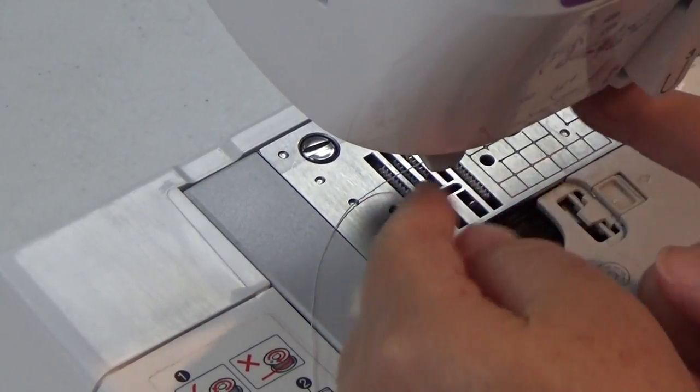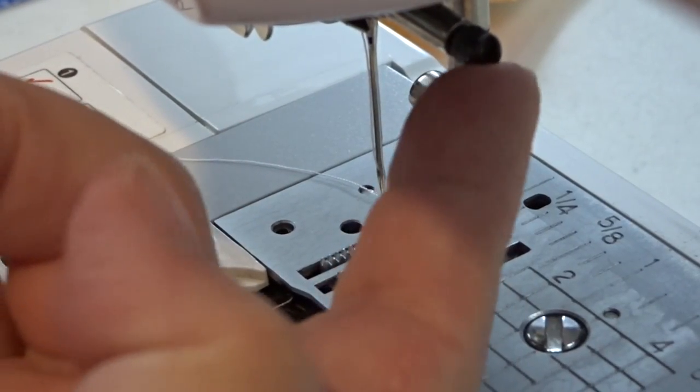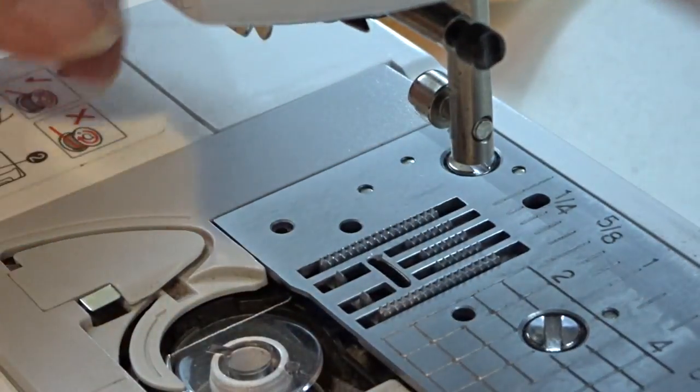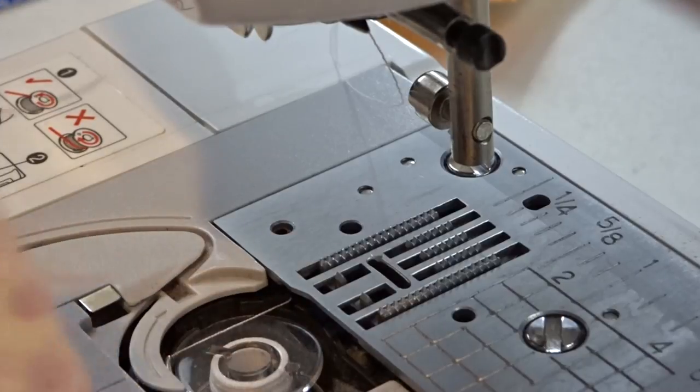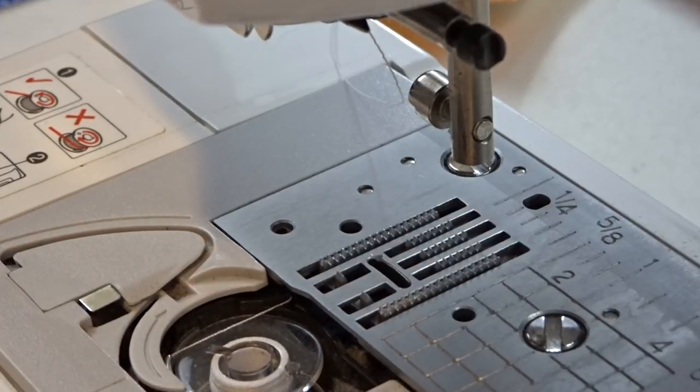Now I'm also going to take out my needle. On the Brother models I have a little turn here, and all I'm going to do is turn to the left and out will come my needle. I'm just going to put this into my little scrap piece of fabric. I don't want to lose that.